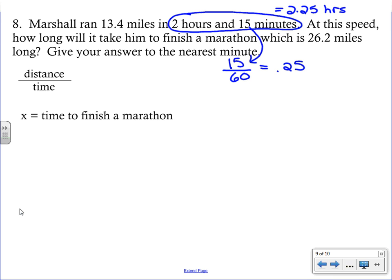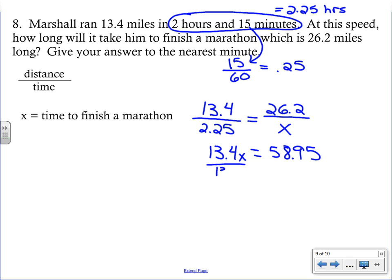Our first ratio, we're going to put the distance 13.4 over 2.25. Then on the other side, we have to keep the distance on top. So we'll put the 26.2 over our variable x. We will cross multiply. We'll start with the variable. So 13.4x equals 58.95. Now you'll notice we have quite a few decimals in these problems. So if you have not purchased your calculator yet, make sure you head to a store and get one tonight. We're going to divide both sides by 13.4. And we come up with x equals 4.399.